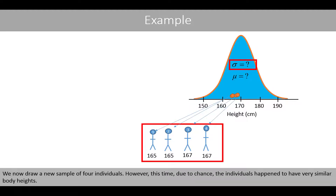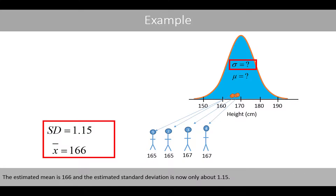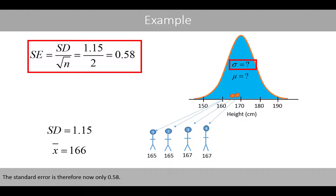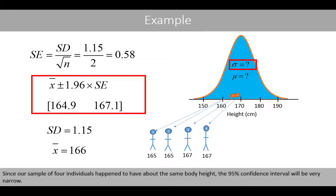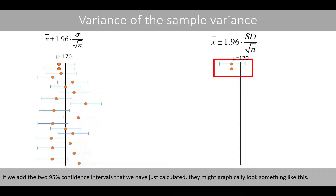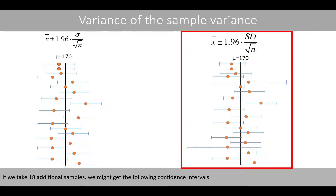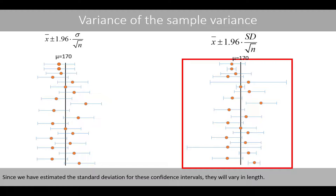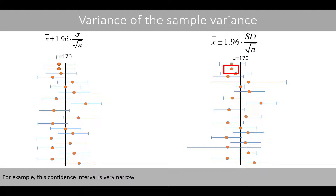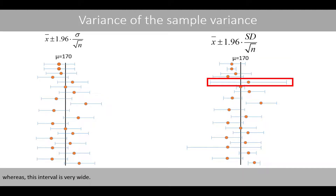We now draw a new sample of 4 individuals. This time, due to chance, the individuals happen to have very similar body heights. The estimated mean is 166 and the estimated standard deviation is now only about 1.15. The standard error is therefore now only 0.58. Since our sample of 4 individuals happen to have about the same body height, the 95% confidence interval will be very narrow. If we add the two 95% confidence intervals that we have just calculated, they might graphically look something like this. If we take 18 additional samples, we might get the following confidence intervals.